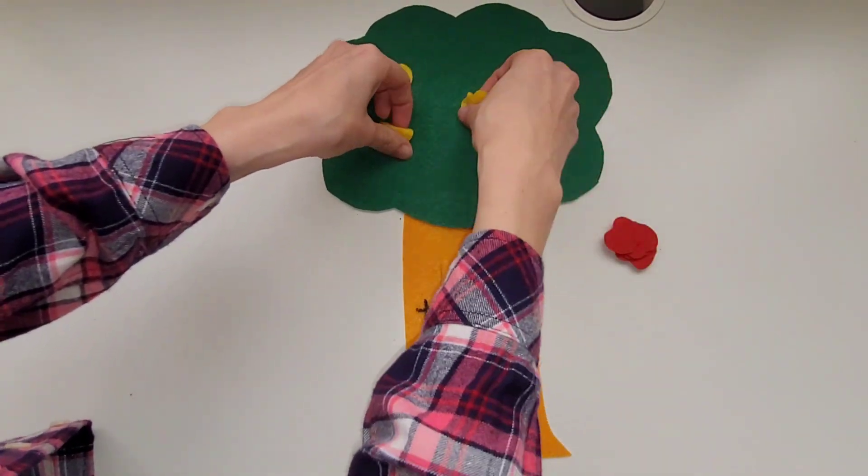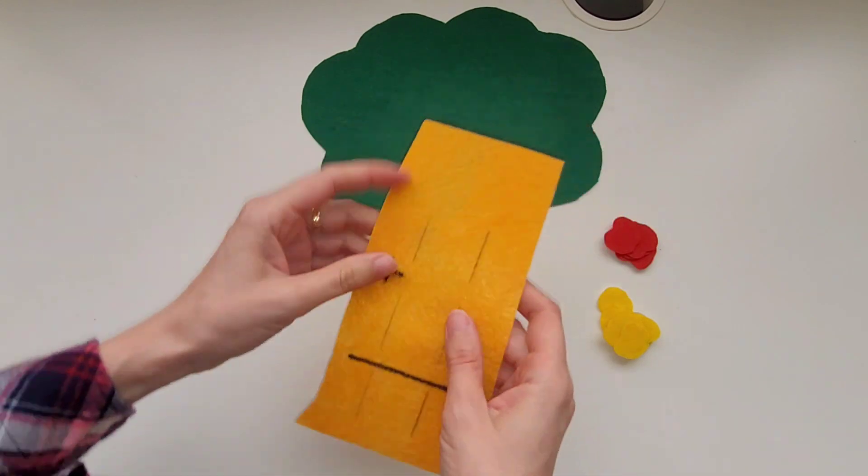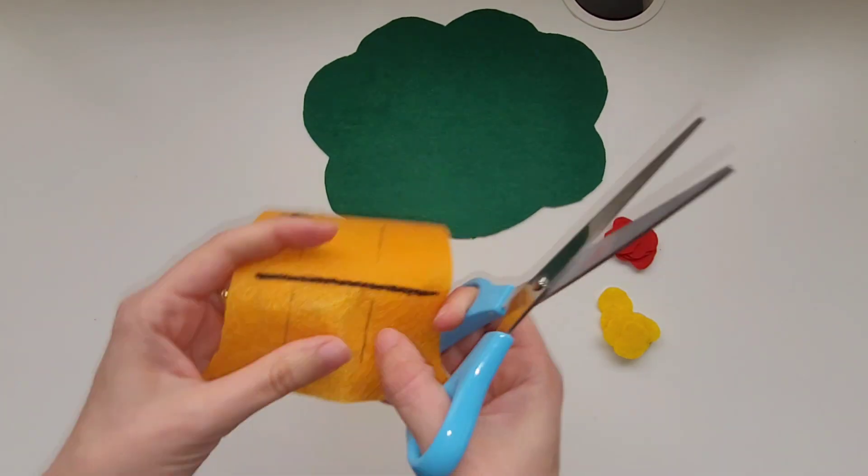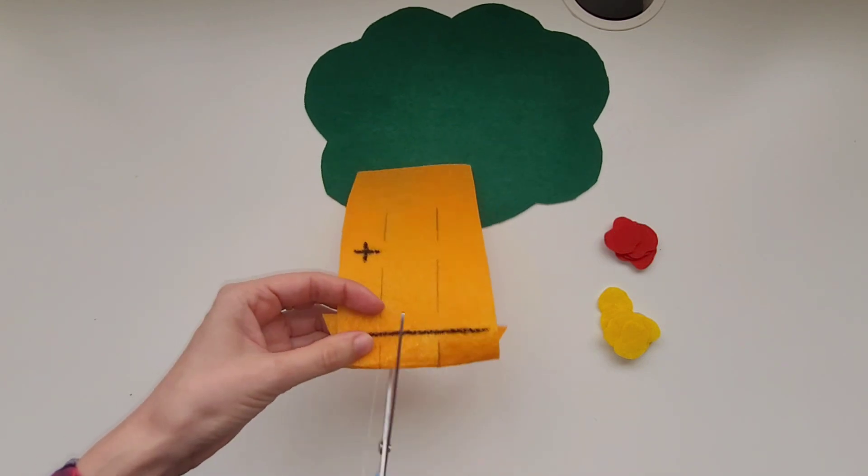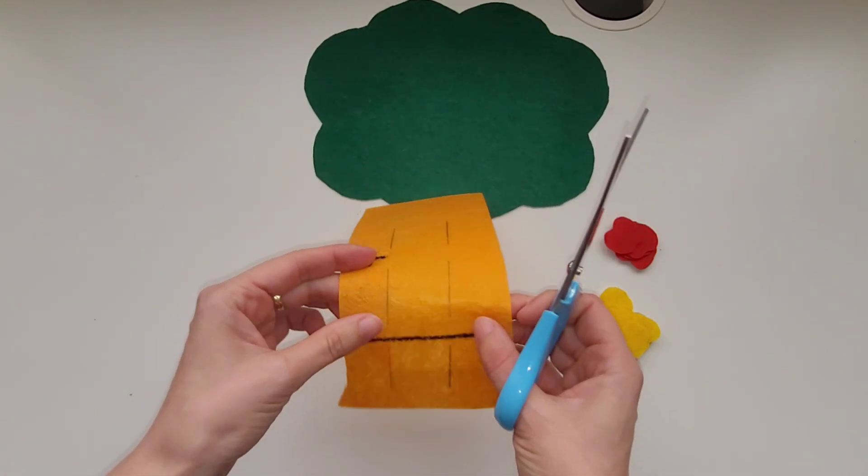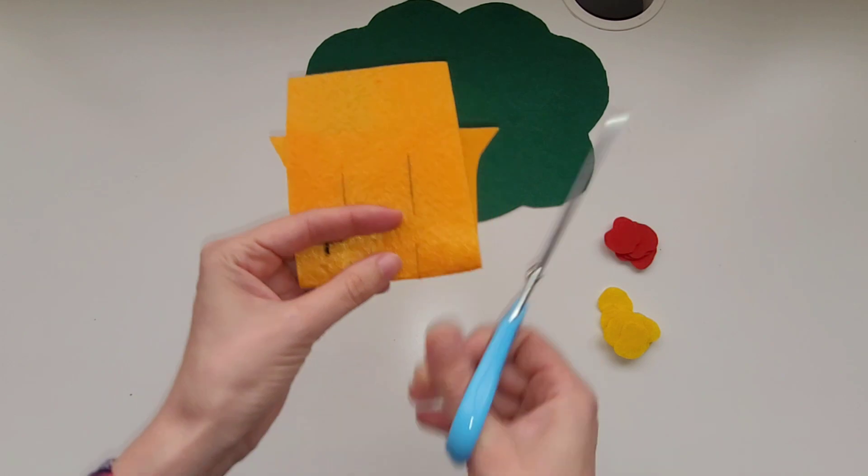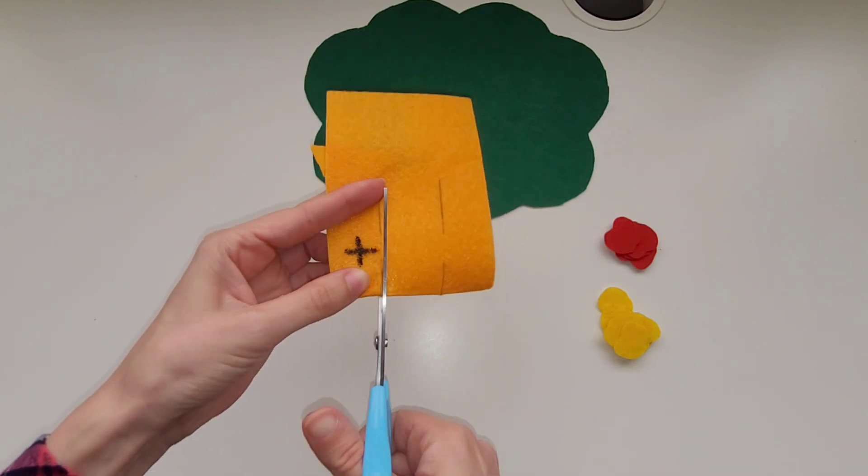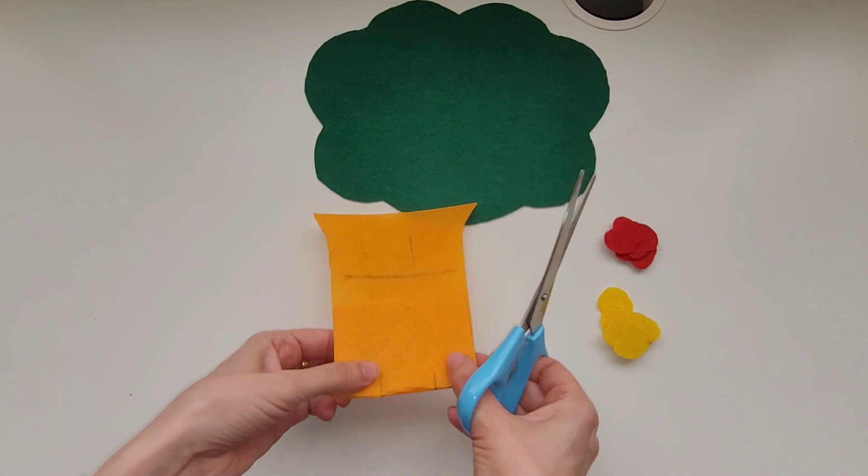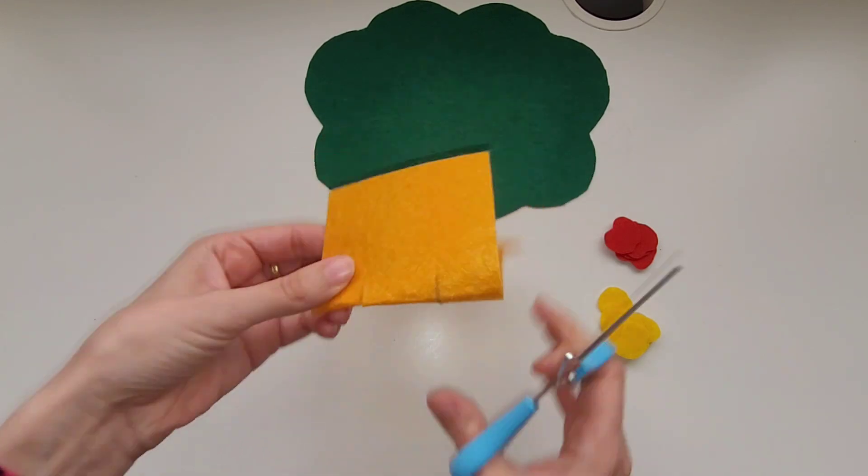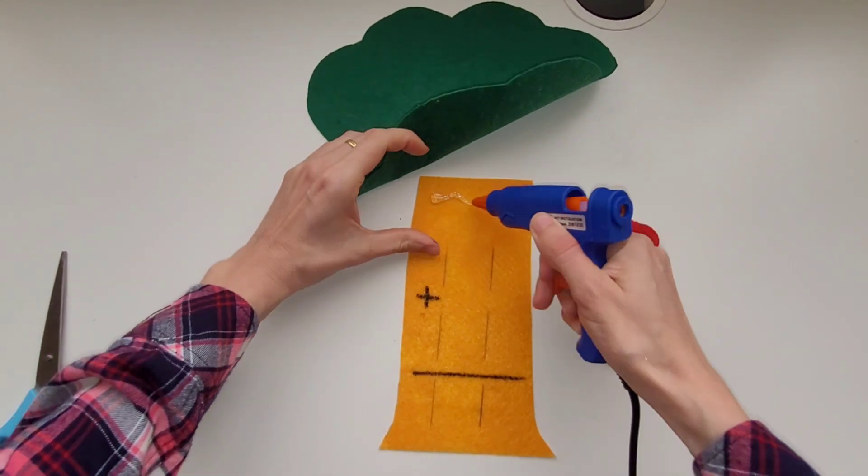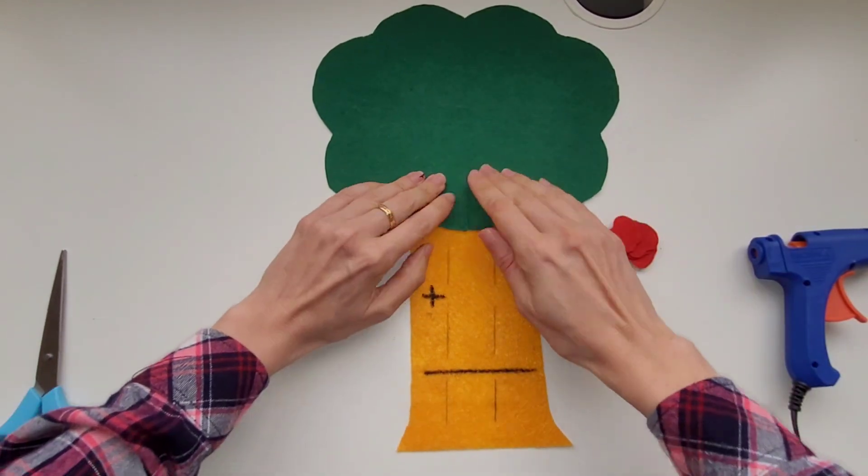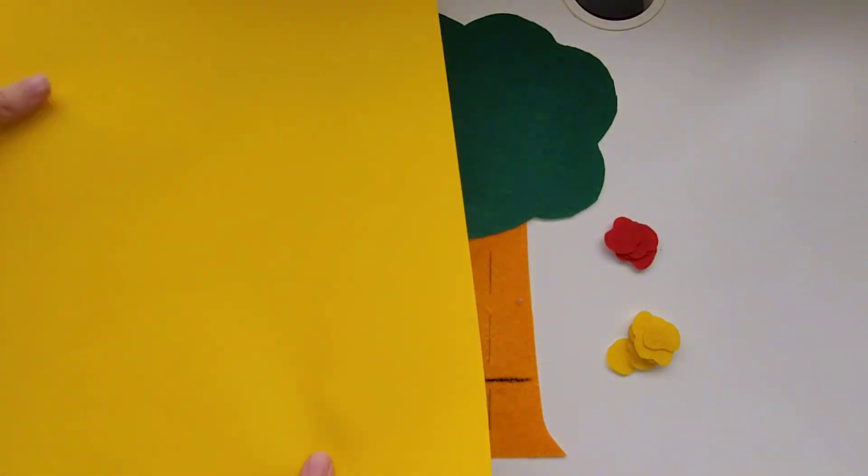After that I am ready to take the apples off and cut out the lines that I just drew. Once I'm done cutting those lines I'm going to use a hot glue gun to secure the top of the tree to the trunk.